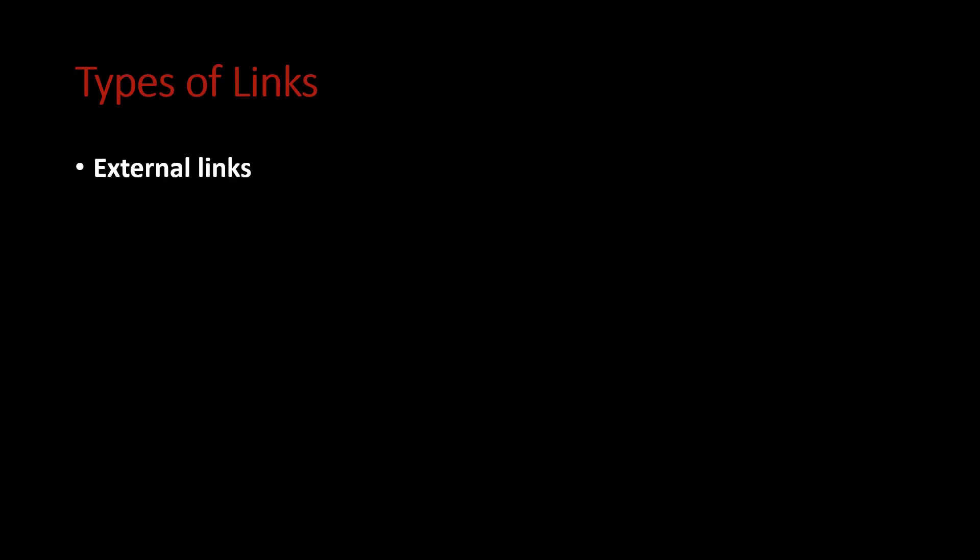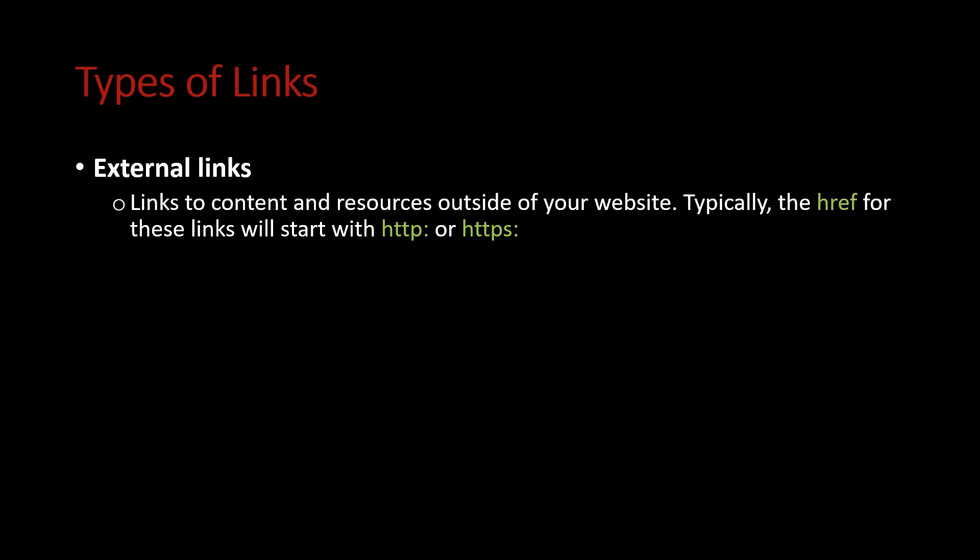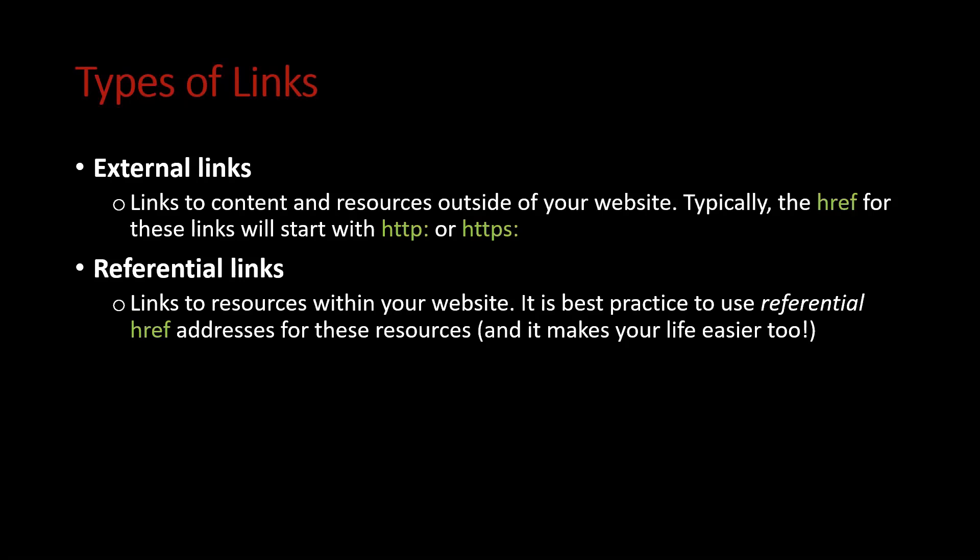To finish out this overview of linking in HTML, I want to introduce the concept of different types of links, and then we'll explore them in more detail later. You can have external links — those are links to content or resources outside of your website. Typically the href value for those links will start with HTTP or HTTPS. Then you also have referential links — these link to resources within your website. It is best practice to use a referential href address for these resources, and we're going to talk about that in more detail in the next video. You'll see that using referential links within your own website makes your life a lot easier.